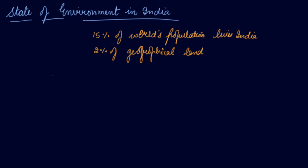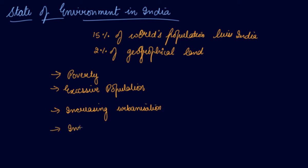What is happening in India? The people are suffering from poverty, excessive population, increasing urbanization, increased industrialization, and deforestation.